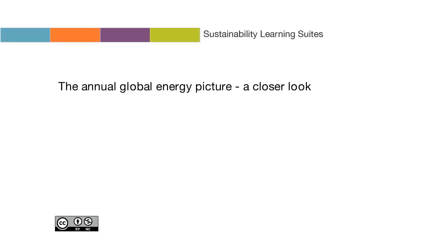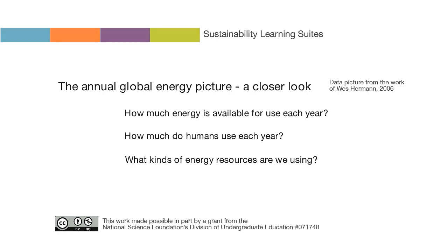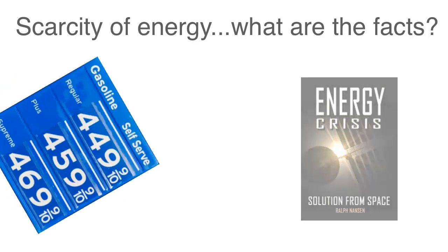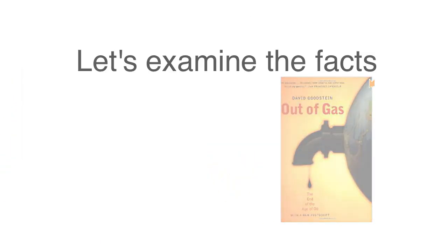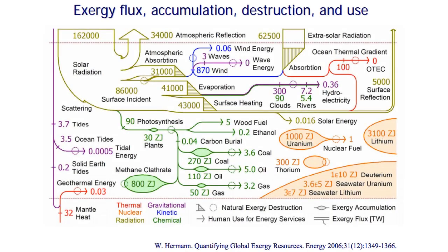The annual global energy picture, a closer look based on the data from the work of Wes Hermann in 2006. In this video we look at how much energy is available for use each year and how much humans actually use each year. We also look at what kinds of energy resources we're using. There is a great deal of concern about the scarcity of energy, particularly in developed countries.